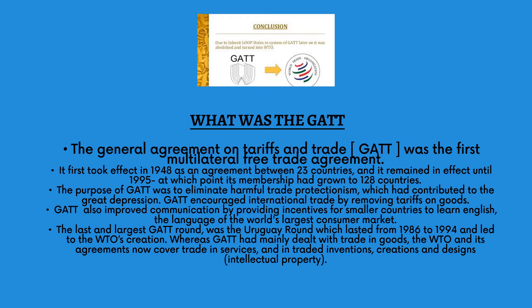Now, what was GATT? GATT was an agreement between 23 nations that remained in effect until 1995, when it was replaced and the WTO came into being on 1 January 1995. The last and largest GATT round was the Uruguay Round, which lasted from 1986 to 1994 and led to the WTO's creation.